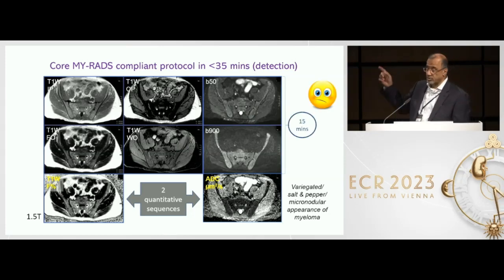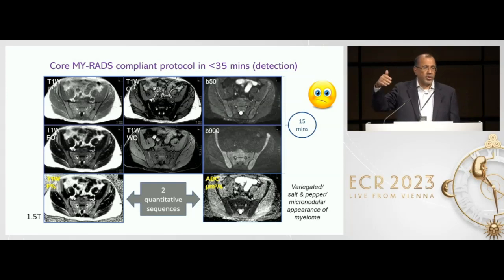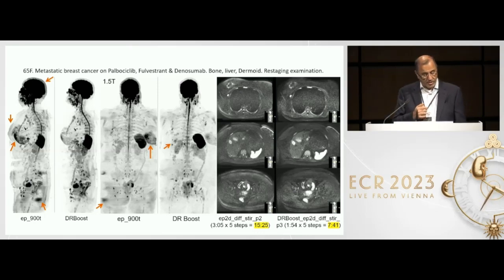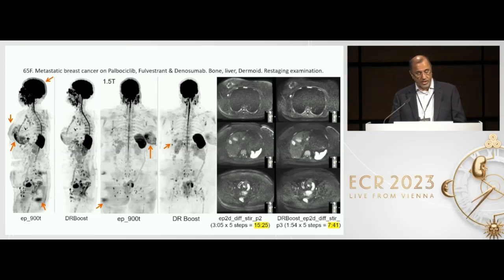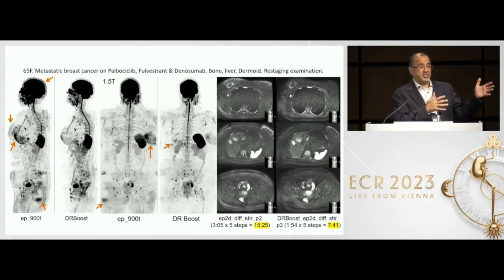The problem is that this whole-body sequence is going to take about 15 minutes, and if you factor in table moves and adjustments, that comes in at about 20 minutes — responsible for the more than half an hour it actually takes to acquire the data. But we are making progress in reducing the time for diffusion. In a patient done last week, the normal sequence head to mid-thighs took 15 minutes 25 seconds, and the AI reconstructed diffusion sequence over the same volume took only 7 minutes 41 seconds. These new sequences are now coming into the clinic, and in a year's time this will become routine.